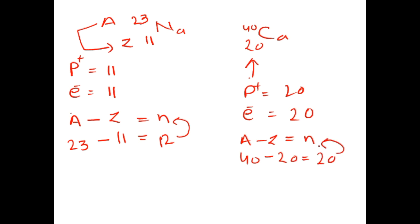This is the simplest trick to find the number of electrons, protons, and neutrons in an atom. I hope you understand it. For more videos, please like and subscribe to my channel. If you have any questions, let me know in the comment box. Thank you so much for watching.